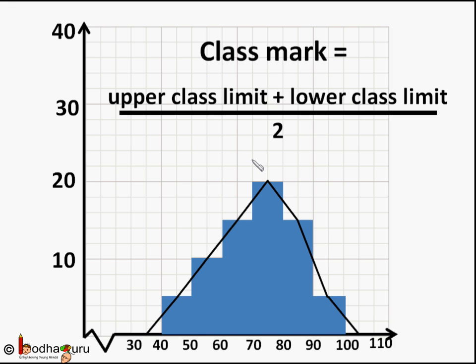Remember in the earlier video we drew frequency polygon from histogram by joining the class mark. So class mark is upper class limit plus lower class limit divided by 2.